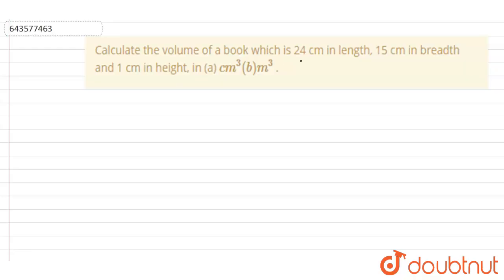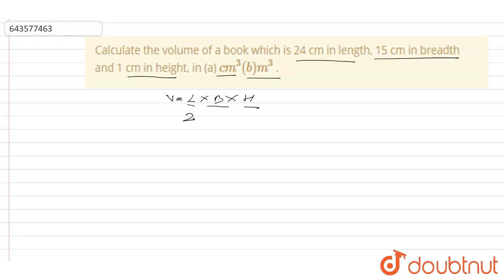Today the question is: find the volume of a book which is 24 centimeters in length, 15 centimeters in breadth, and 1 centimeter in height — in both centimeter cube and meter cube. First, we'll find the volume in centimeter cube. The formula for finding volume is V = l × b × h, which is length into breadth into height. So the given values are 24 into 15 into 1, and the answer is 360 centimeter cube.